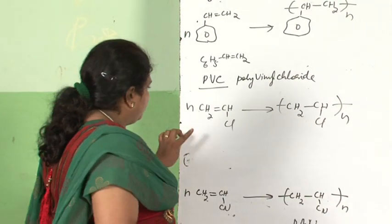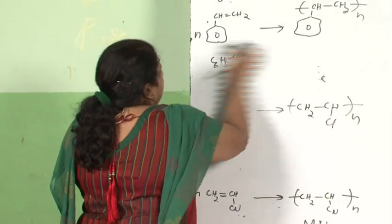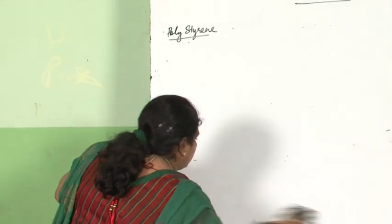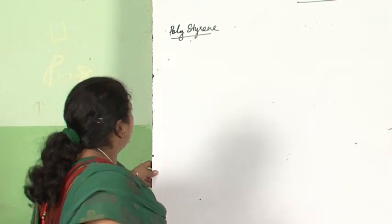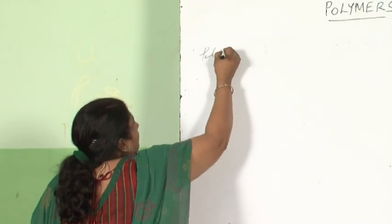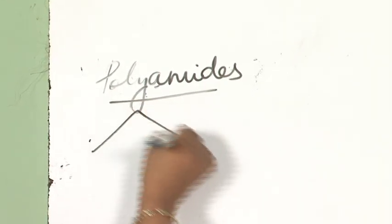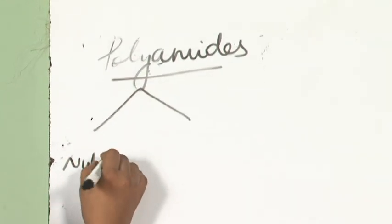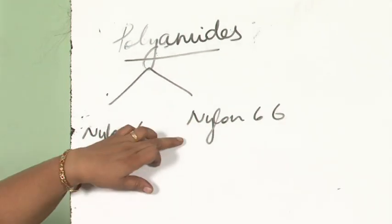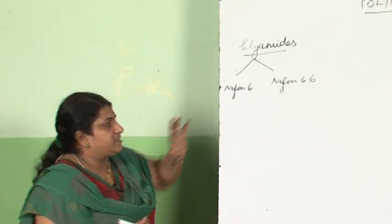Now we come to nylon 6 and nylon 6,6, which fall under the category of polyamides. Two polyamides need to be studied: nylon 6 and nylon 6,6. Nylon 6,6 is formed by condensation polymerization of adipic acid and hexamethylenediamine.